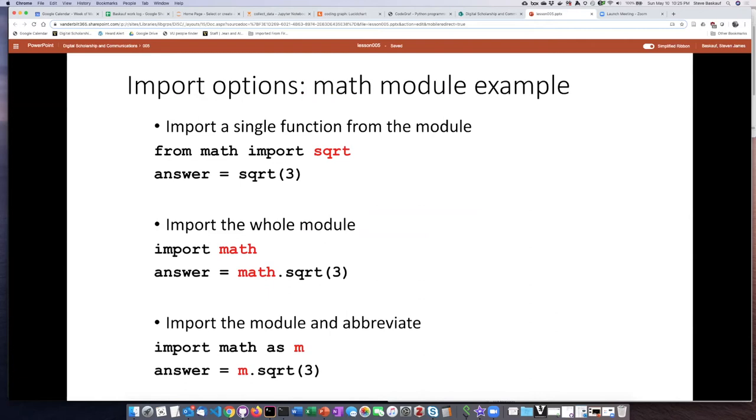The import statement looks something like this. If we want to import just a single function from the module, we use this format: we say 'from,' then the name of the module, 'import,' and then the name of the function we want to import. If we import the function this way, then we can simply give the function name like we would with any other function, and that's all that is required.